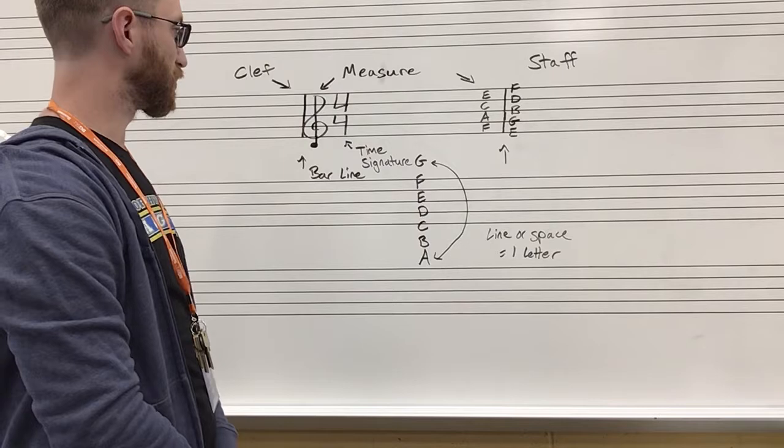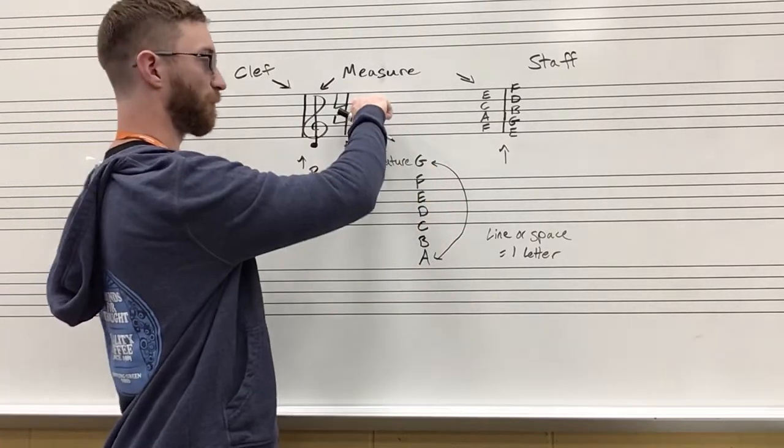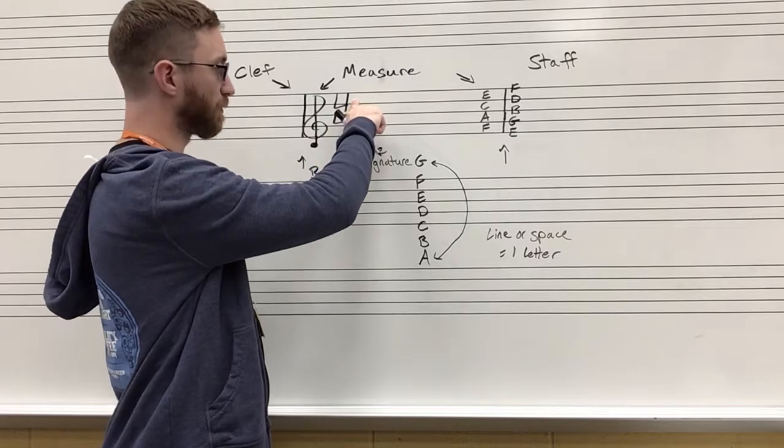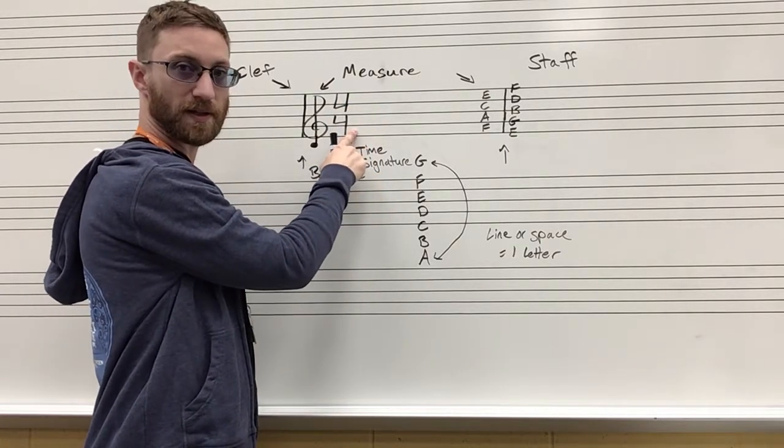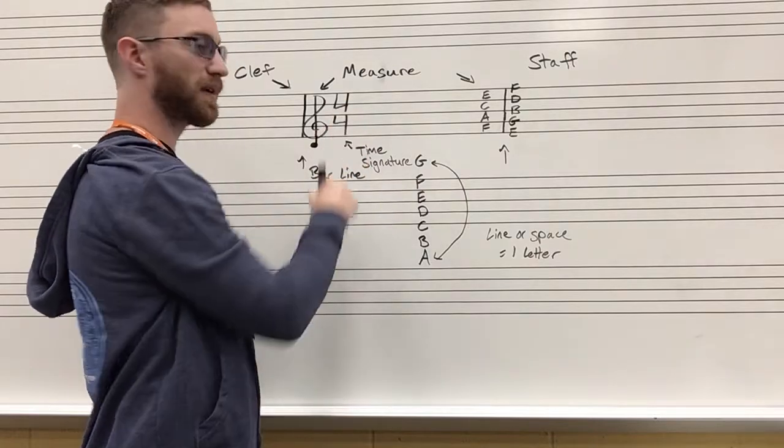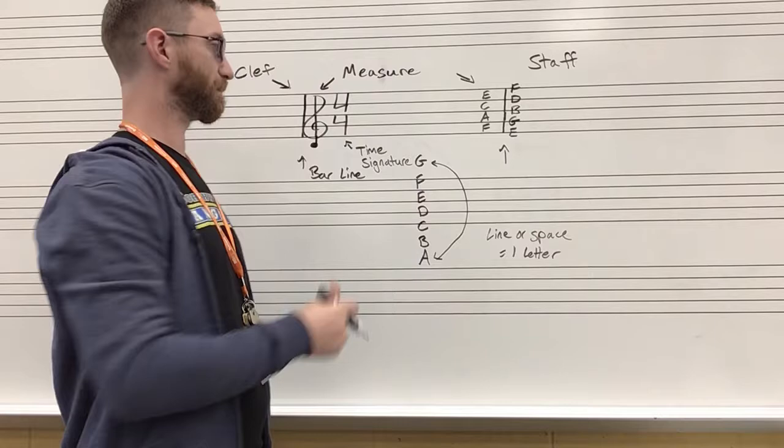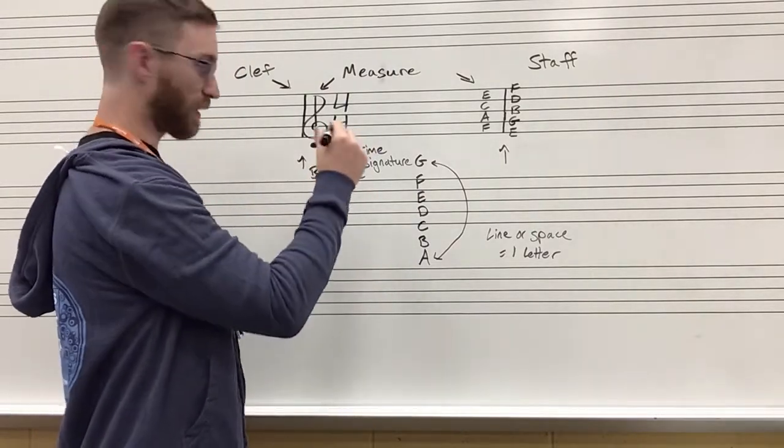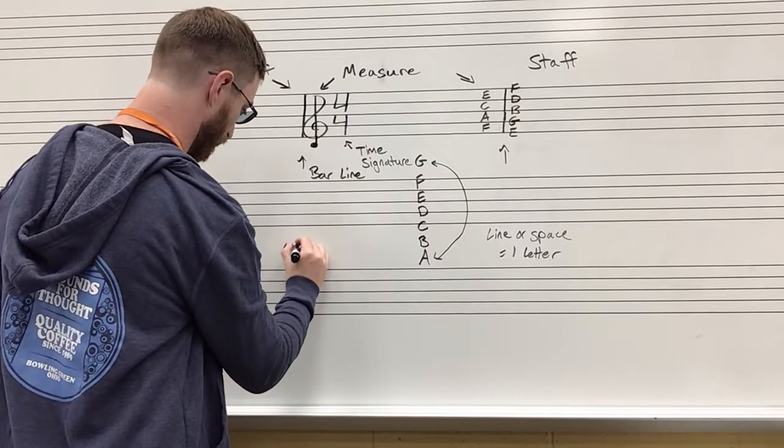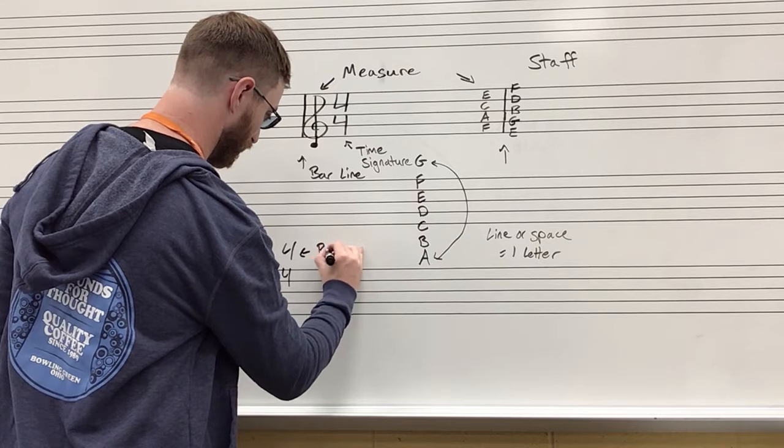The time signature is going to tell us that we have four beats per measure with the top number, and that the quarter note gets the beat as the bottom number. Top number tells us how many notes in a measure. The bottom number tells us what kind of note gets the beat. Okay, so I'll put that down here: four, four beats per measure.